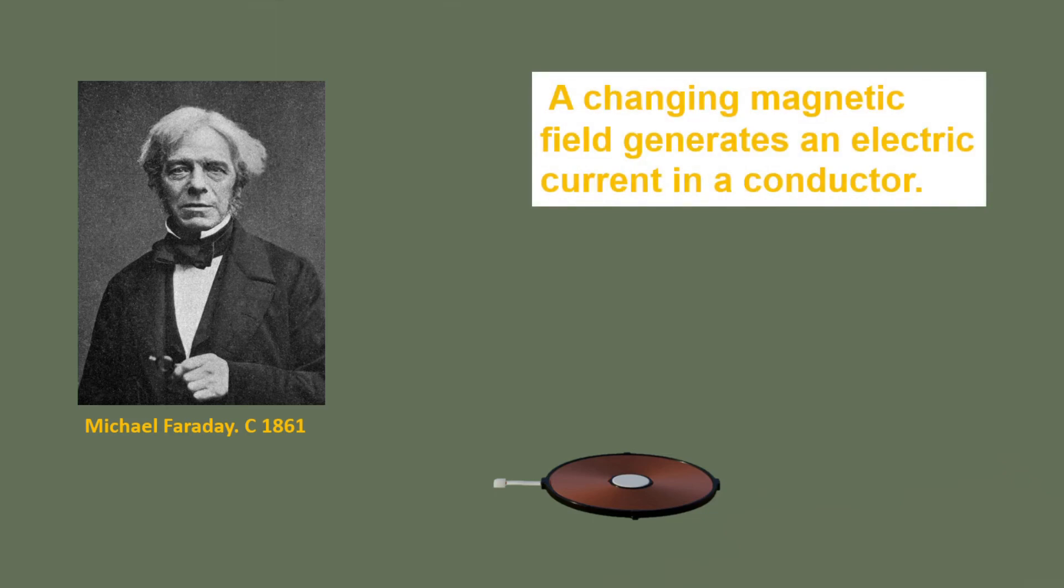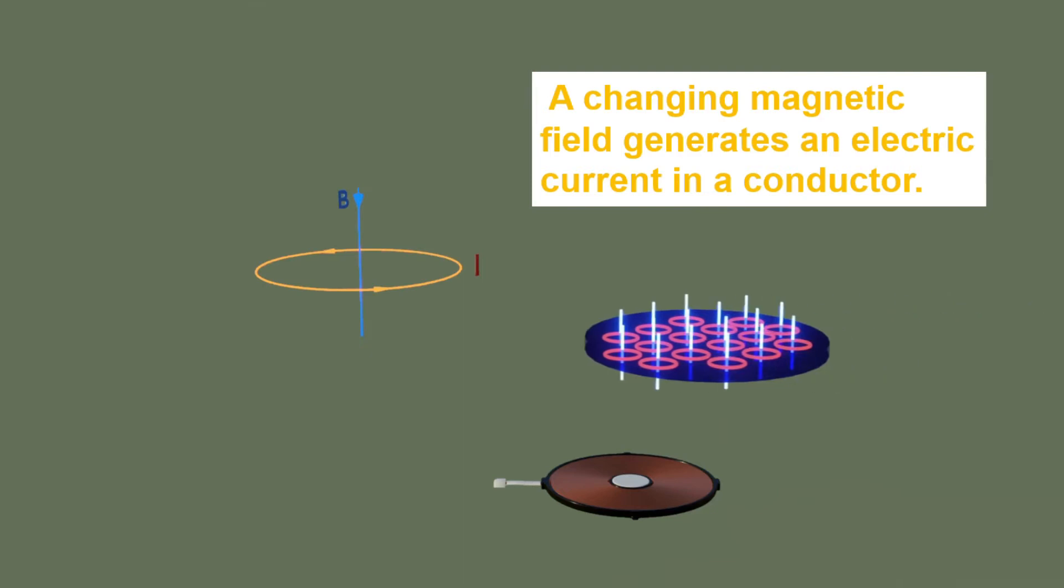Here, the inductor is used to generate the changing magnetic field. The cooking pan itself is the conductor.